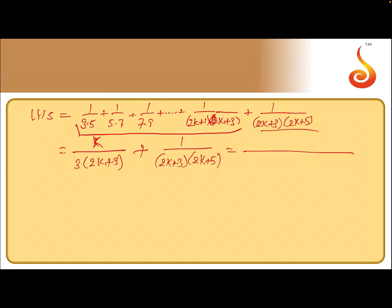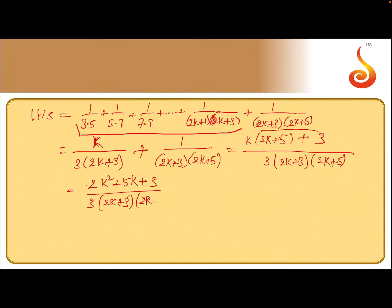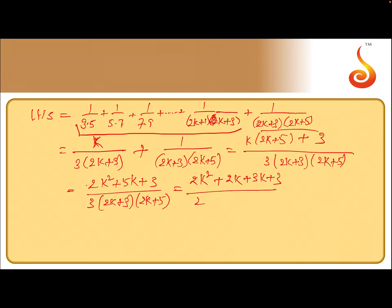Taking LCM as 3(2k+3)(2k+5), the numerator becomes k(2k+5) + 3, which expands to 2k² + 5k + 3, all divided by 3(2k+3)(2k+5).